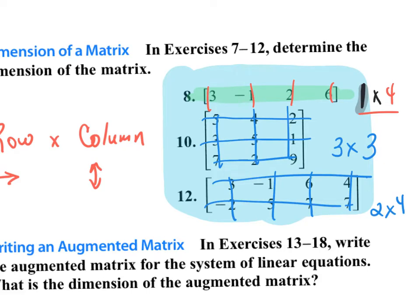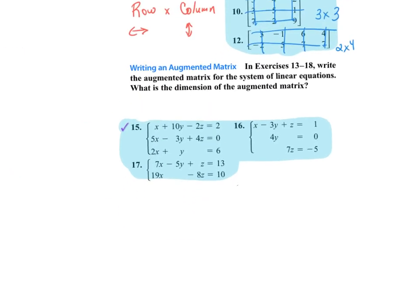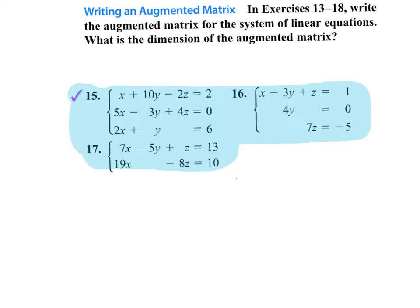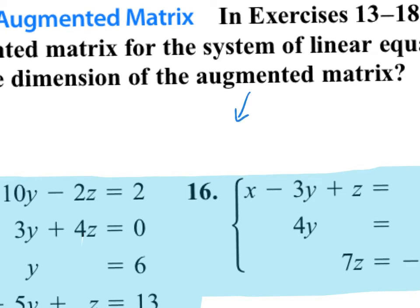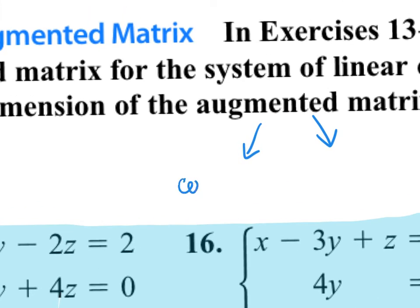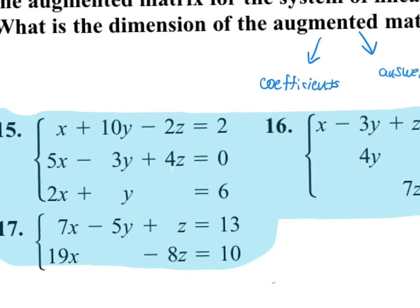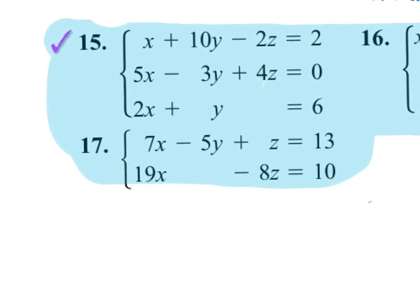Now if they give you a system of equations and say to write the augmented matrix: an augmented matrix means it has two parts — the coefficients and the answers. If they ask for just the coefficient matrix, give just that. If they want just the constant matrix, give that. But if they want the augmented matrix, you give both. If a variable is not represented in a specific row, put a zero.